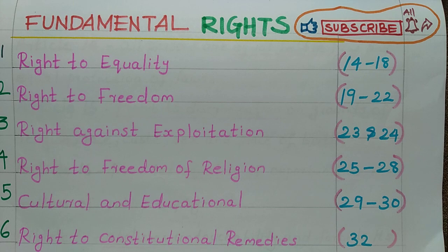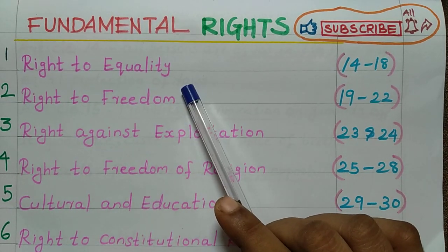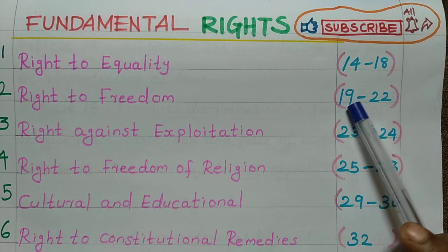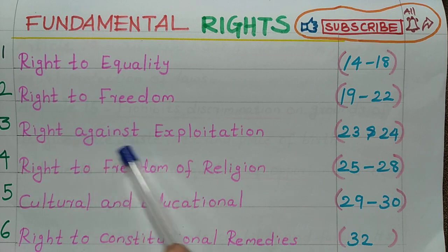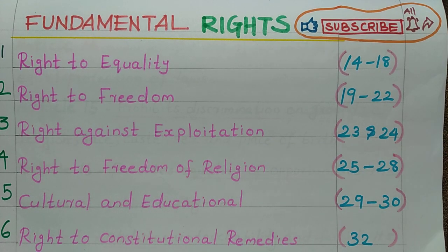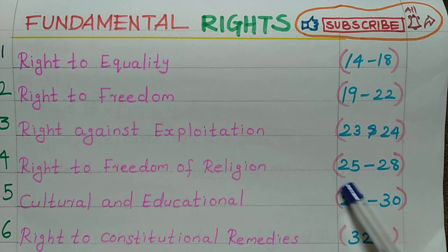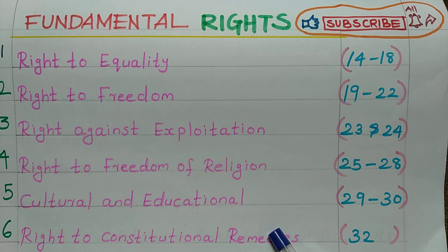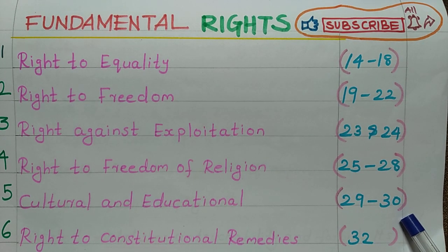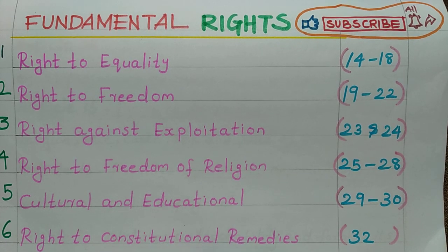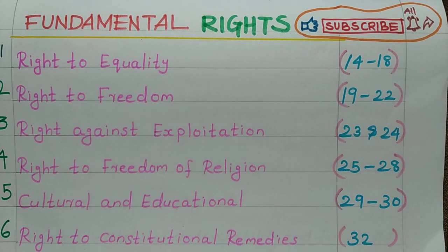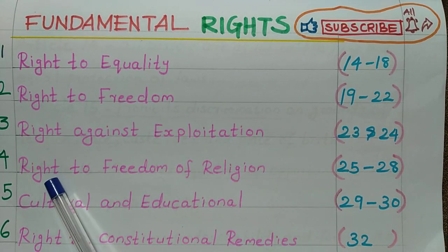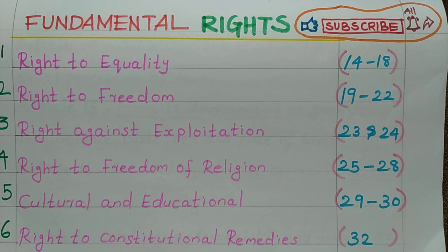The six fundamental rights are: first, Right to Equality (Articles 14–18); second, Right to Freedom (Articles 19–22); third, Right Against Exploitation (Articles 23–24); fourth, Right to Freedom of Religion (Articles 25–28); fifth, Cultural and Educational Rights (Articles 29–30); and sixth, Right to Constitutional Remedies (Article 32).